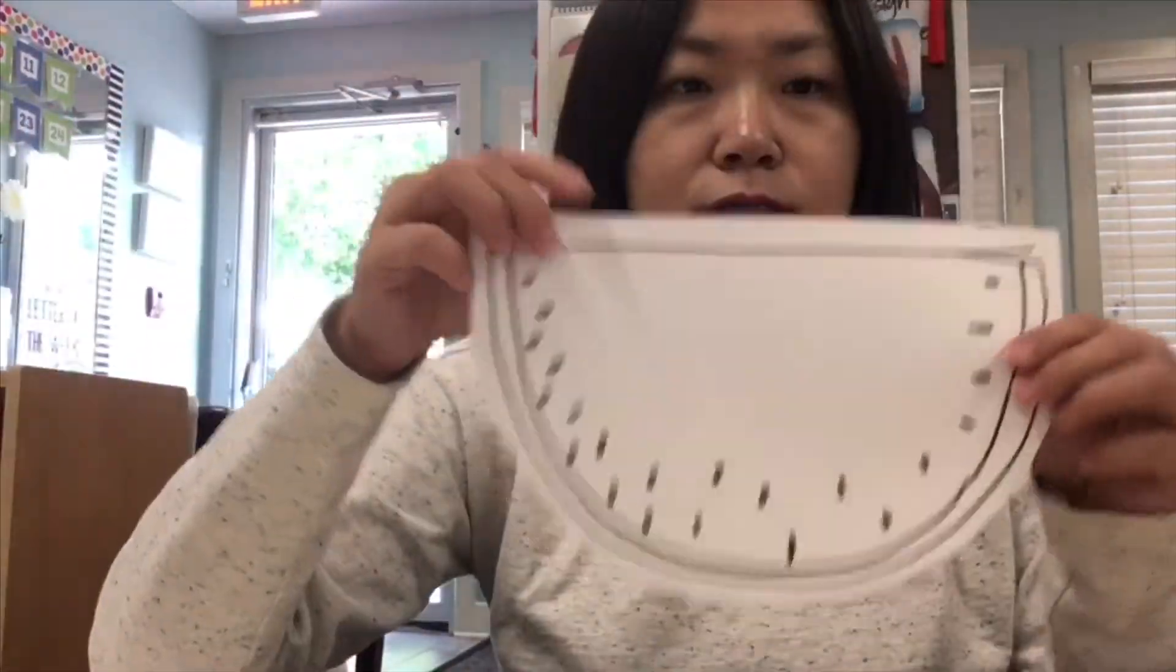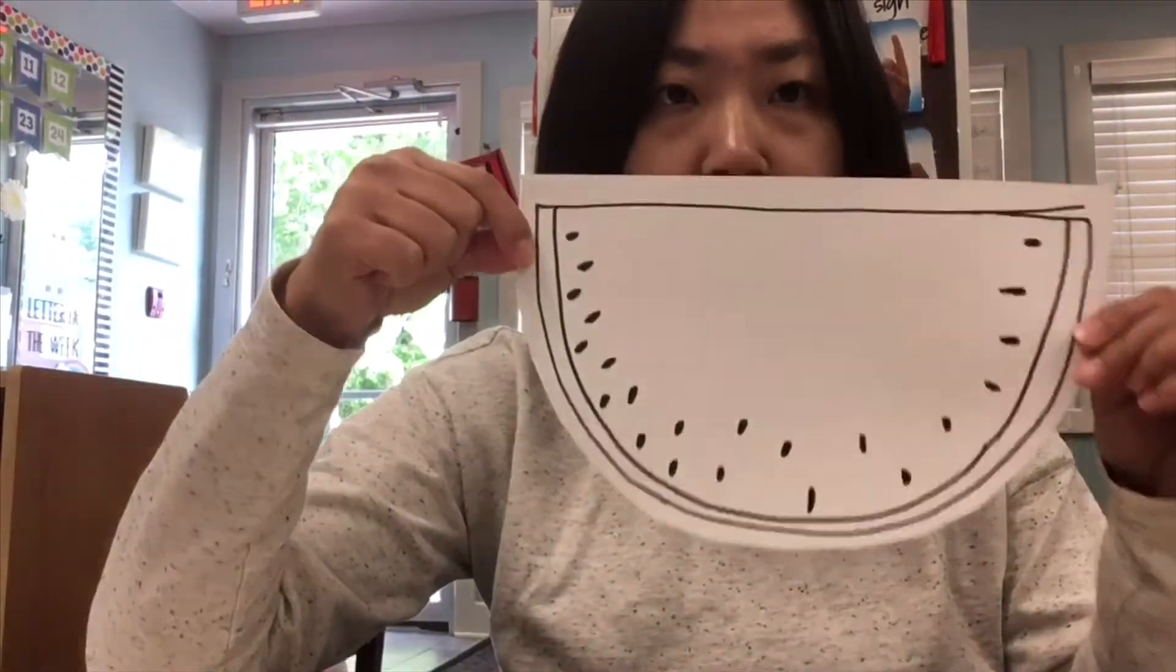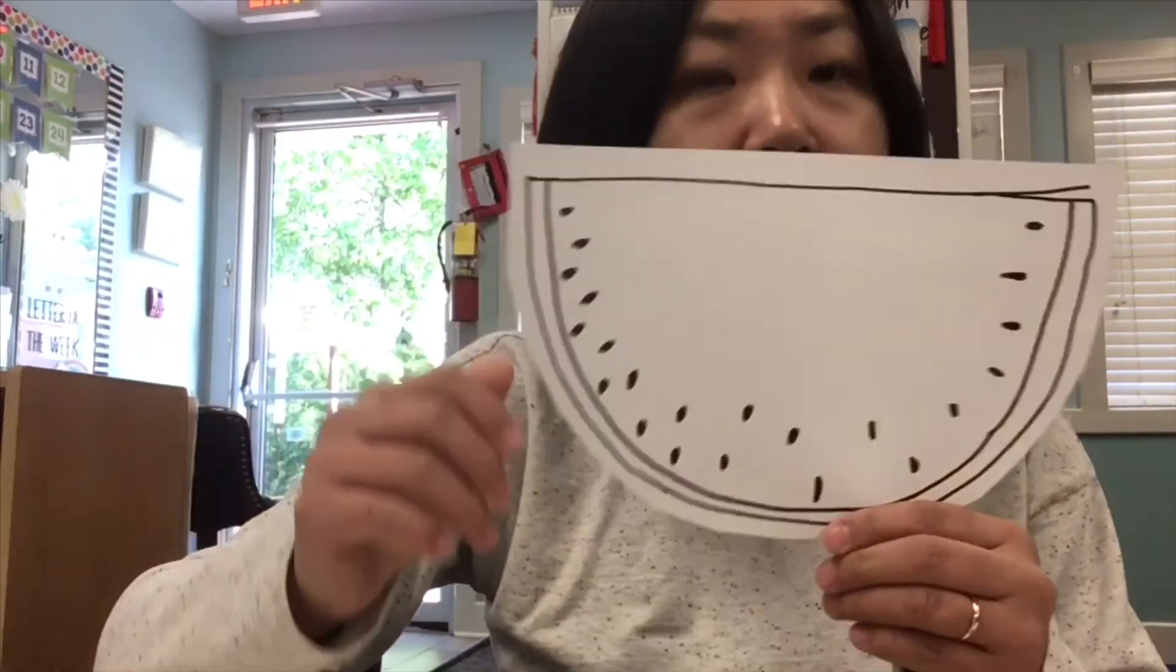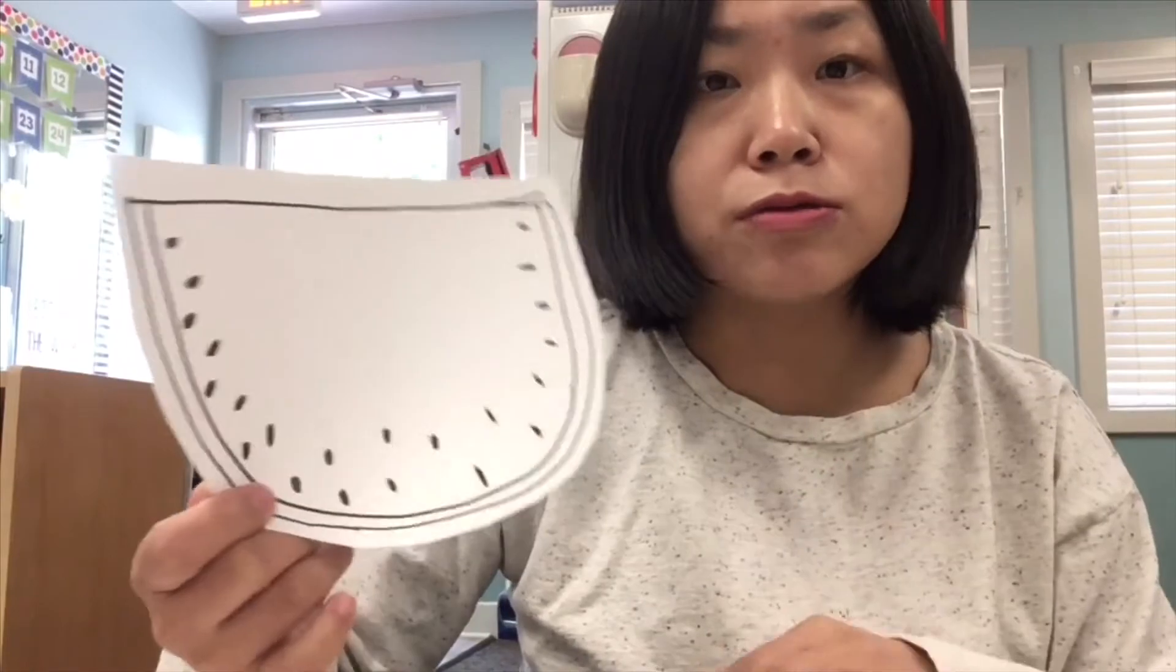So what I have is a watermelon. I'm going to color my watermelon. So in your house, you can use markers, crayons. If you have paint or watercolor, you can use those too.